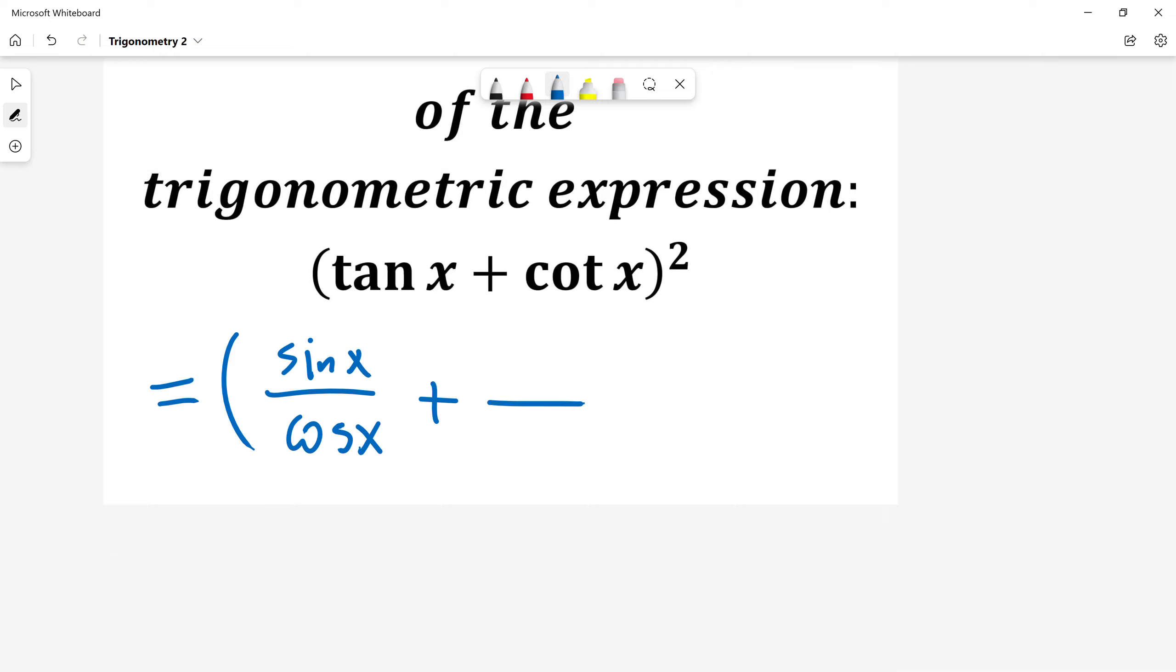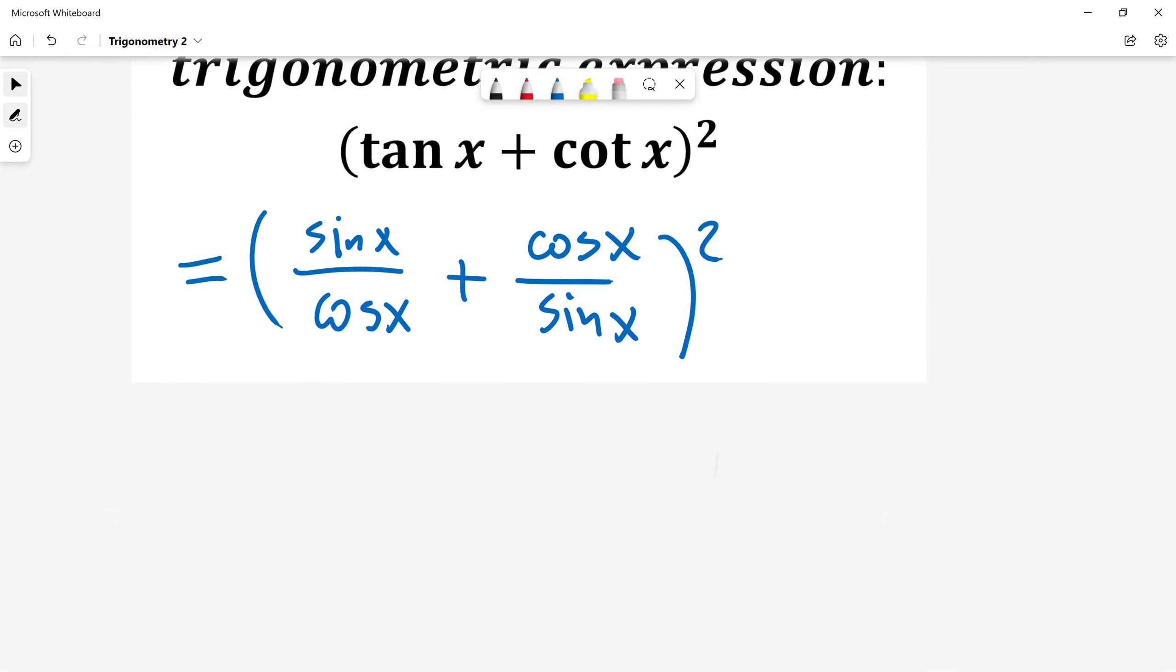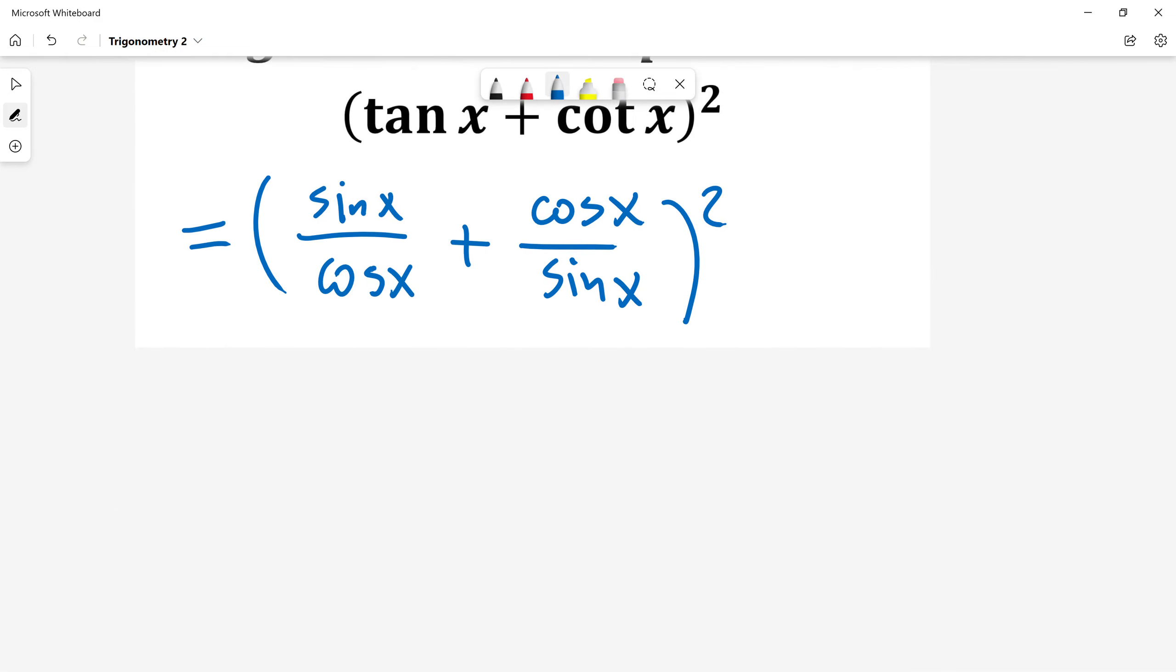Similarly, I can write cot x as cos x divided by sin x. Then in the bracket I'm adding two fractions. When I add two fractions I want to have the same denominators. So common denominator will be sin x cos x.